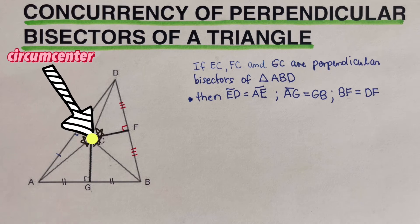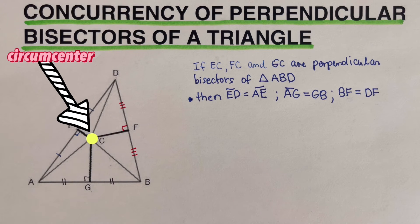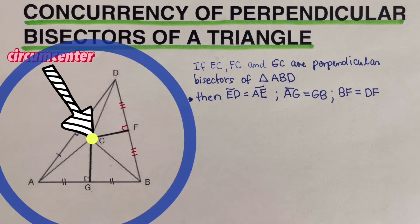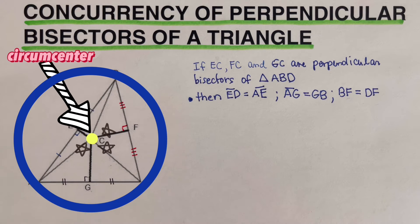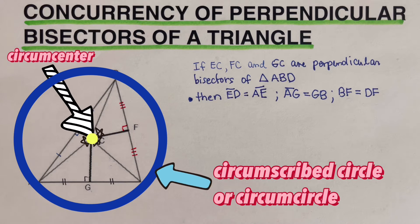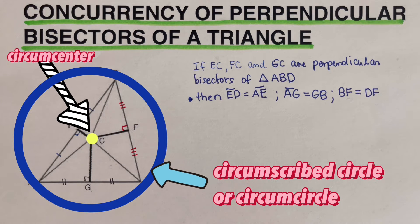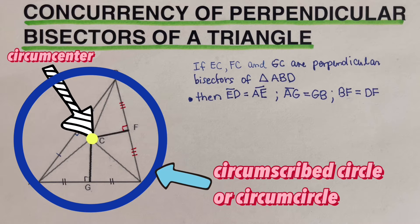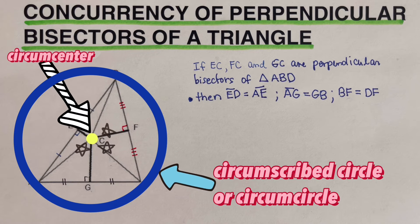So again, this is called the circumcenter. The reason why this is called the circumcenter, it's because this is the center of a circumscribed circle or a circumcircle. This circumscribed circle or circumcircle is a circle that passes through all the vertices of the triangle.